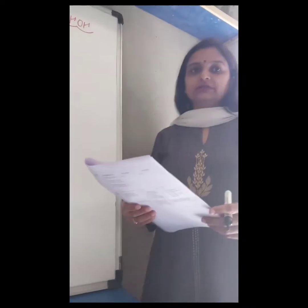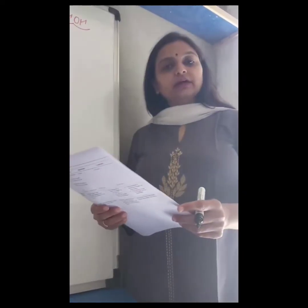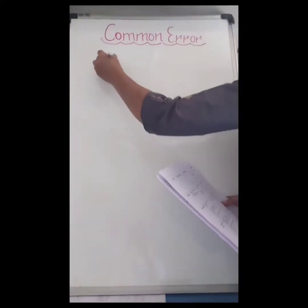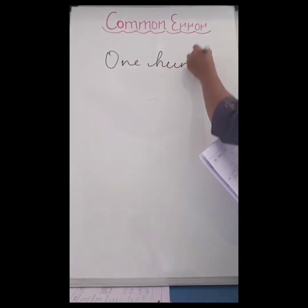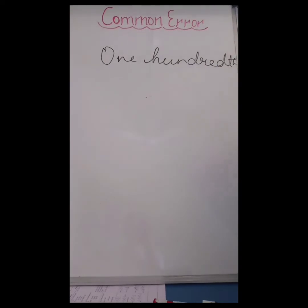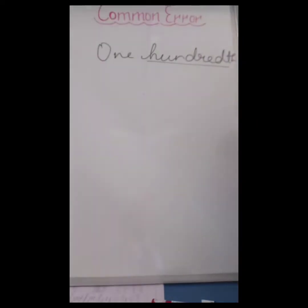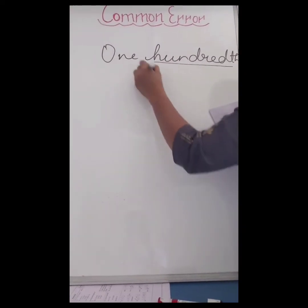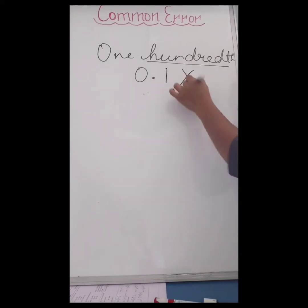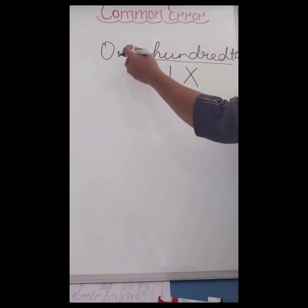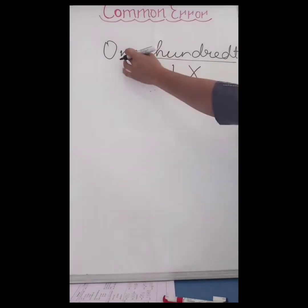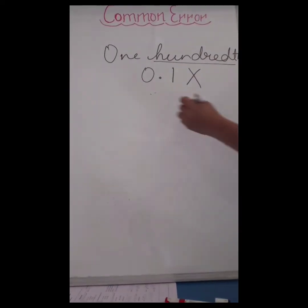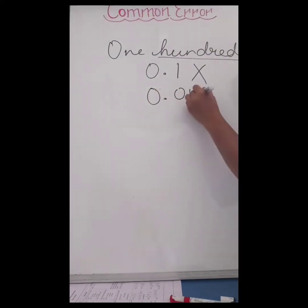The next chapter is decimals. Children tend to get confused in the use of place value. For example, one hundredth — not hundredths; both are very different. The number 0.1 is absolutely wrong when representing one hundredth. Children always write 0.1 when they read 'one hundredth,' but actually hundredth comes after tenth, so 0.01 is the correct one.